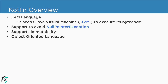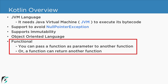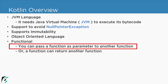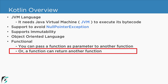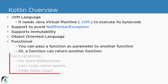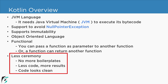Kotlin is an object-oriented language, similar to Java or C++. From day one, Kotlin supports functional programming — it supports lambdas and higher-order functions. In simple words, you can pass a function as a parameter to another function, and even return a function from another function. When writing Kotlin code, we follow less ceremony, meaning no more boilerplate code. We get the same result with fewer lines of code, making our code much cleaner.